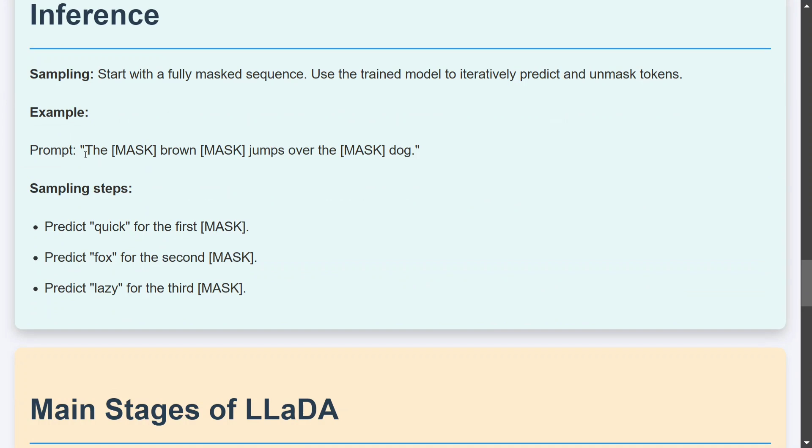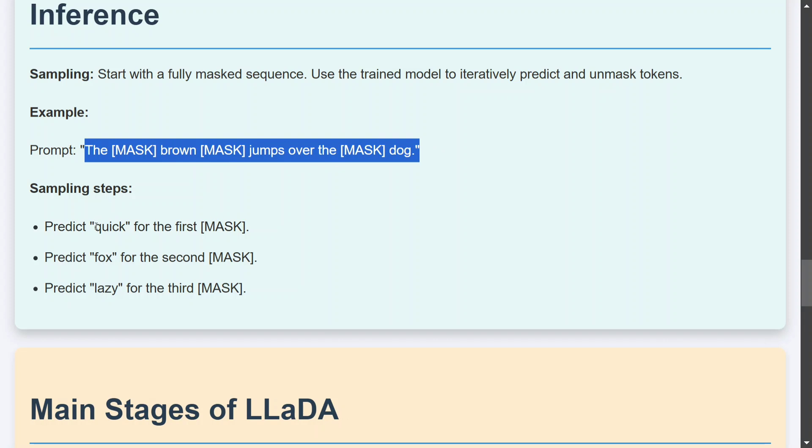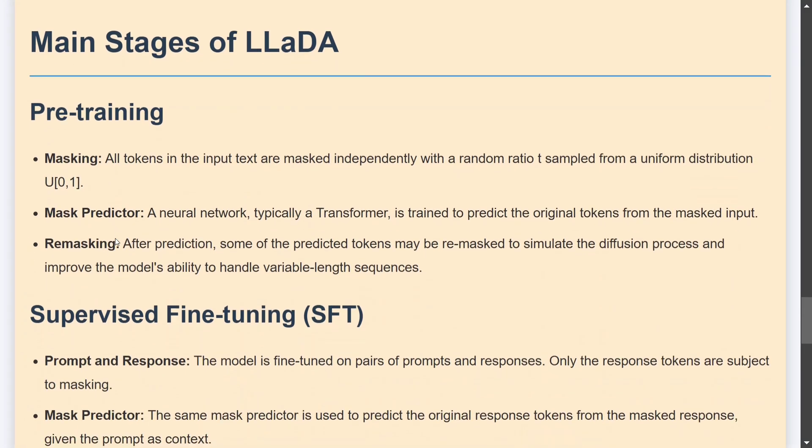Inferencing is also quite easy. Assume the problem to be like this: the mask brown mask jumps over mask dog. So the sampling steps first quick fox lazy. This is how the inferencing would happen.